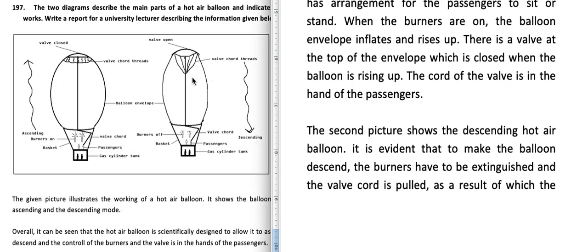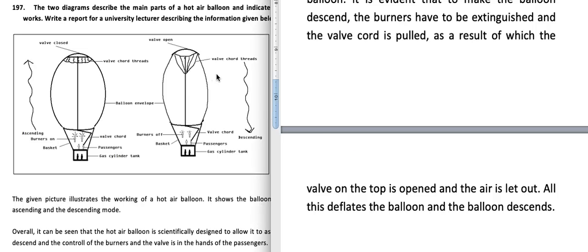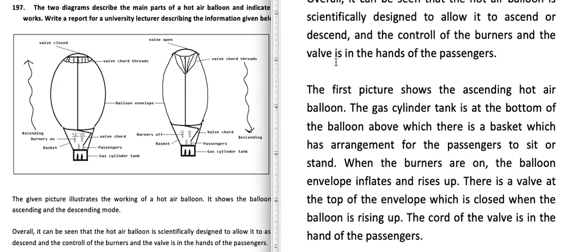The second picture shows the descending hot air balloon. To make the balloon descend, the burners have to be extinguished — burners off — and the valve cord is pulled. When the passengers pull the valve cord, the valve on the top opens and the air is let out. This deflates the balloon: the gas escapes, the burners are already off, and the balloon deflates and descends.